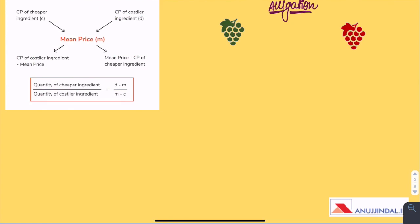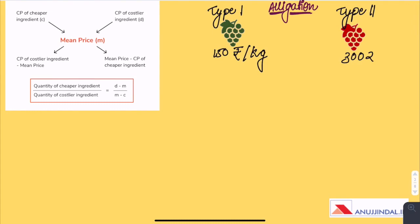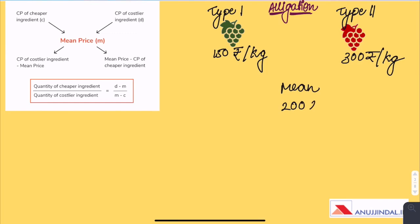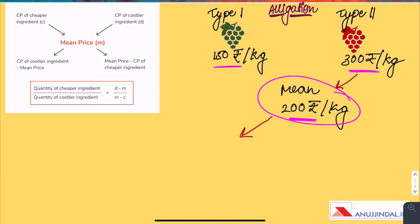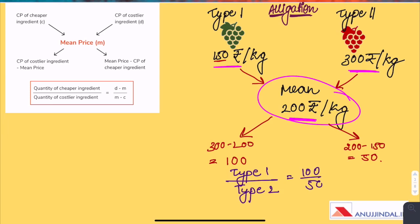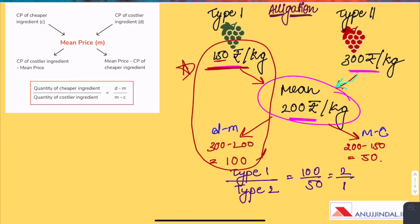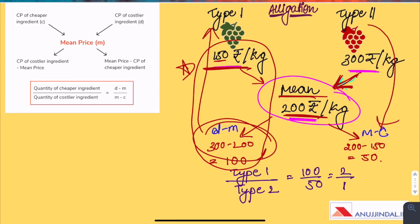Let us understand this concept of alligation with an example. Type 1 grapes cost Rs. 150 per kg and Type 2 grapes cost Rs. 300 per kg. The mean or desired price is Rs. 200 per kg. We find D minus M, which is 300 minus 200 equals 100, and M minus C, which is 200 minus 150 equals 50. So the ratio of Type 1 to Type 2 is 100 to 50, which is 2 to 1. The difference between the mean and Type 2 gives the ratio of Type 1, and M-C gives the ratio of Type 2.